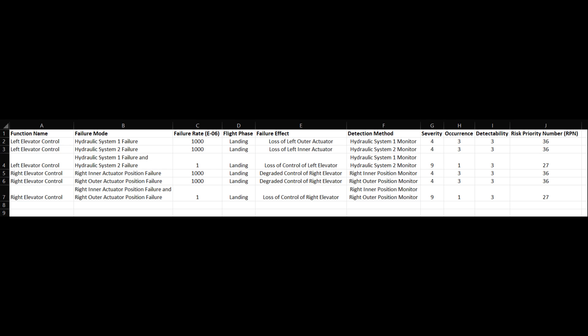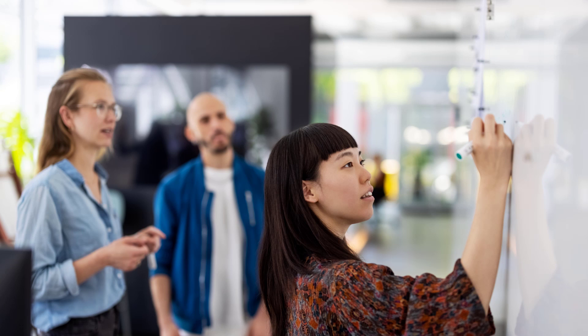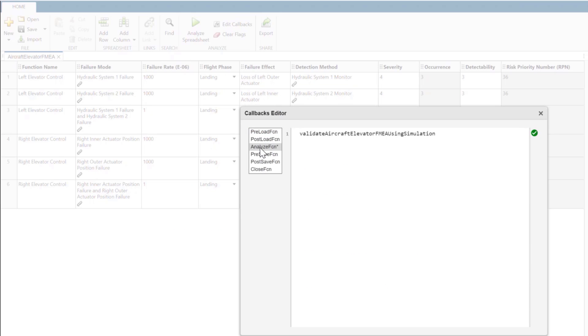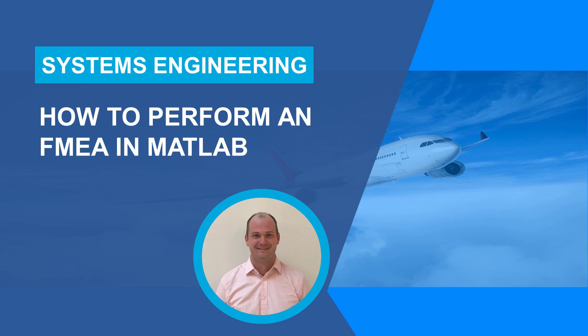FMEA is an iterative process, which needs to be performed throughout a product's life. It is a living document, which needs to be reviewed and updated regularly. Some teams use a spreadsheet tool like Microsoft Excel, others use a dedicated safety analysis tool, and some teams start with a whiteboard. What is important is that the set of tools and processes provide flexibility while encouraging team-based creativity and appropriate automation to augment engineering expertise. You can use the power of MATLAB and Simulink to validate assumptions and automate steps in your FMEA. To learn how, check out our video, 'How to Perform an FMEA in MATLAB.' See the link in the description below.